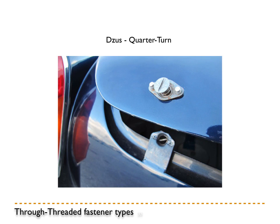Another interesting type is a Zeus fastener — it gives you quick access for removing a panel or hood on a car. You can use a large coin or a specific rounded screwdriver-like tool. You just turn it a quarter of a turn and it releases. To close it again, you push it in and turn it back. Because it's spring loaded, it tolerates vibration very well and gives very easy access.